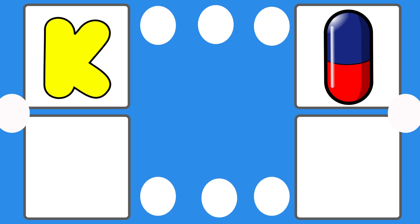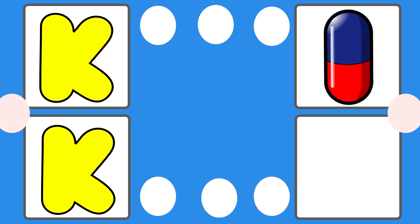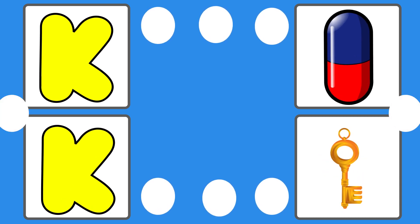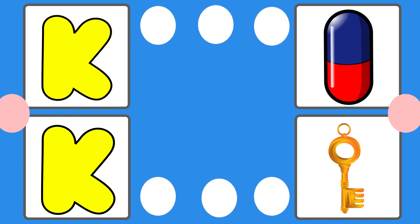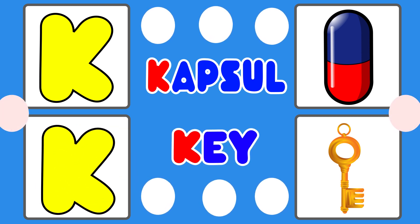K is for Kettle. K-K-Kettle. K is for Key. K-K-Key. K is for Kettle. K is for Key.